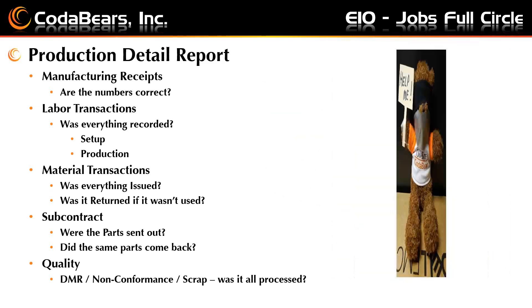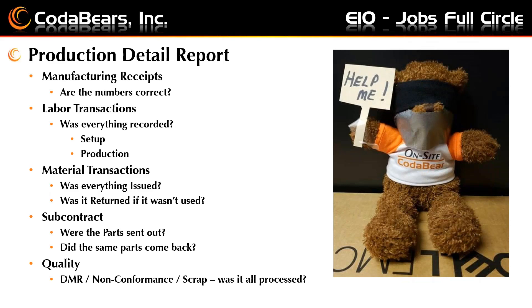Everyone is getting production detail reports, but I doubt if anybody is actually running them. A lot of customers I walk into — they print it because they were told to during implementation and it goes in a file and never gets reviewed. You need to look at these production detail reports. Are the manufacturing receipts correct? If labor wasn't issued to the job, or materials weren't issued, or subcontract price wasn't specified — where did those costs end up going?